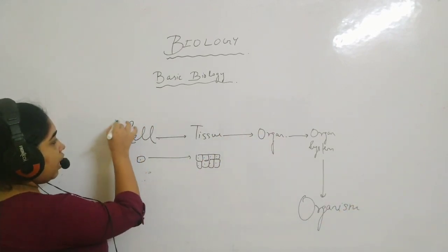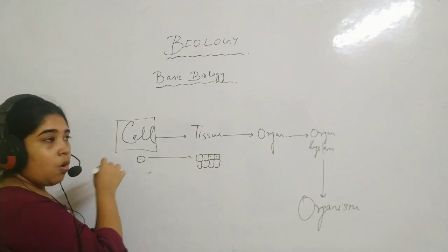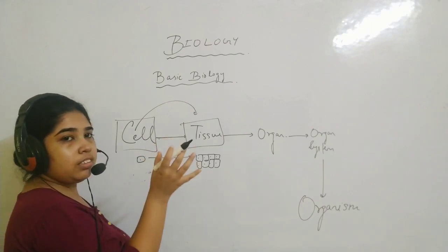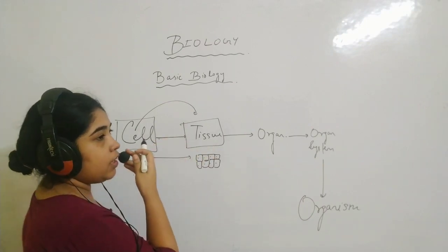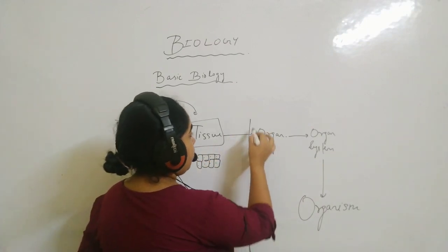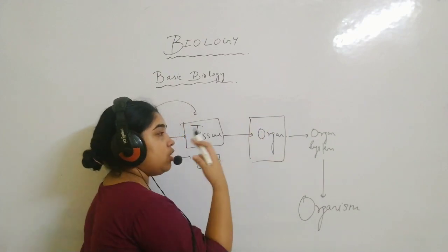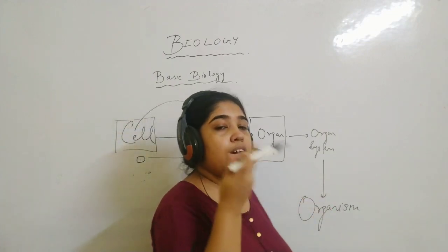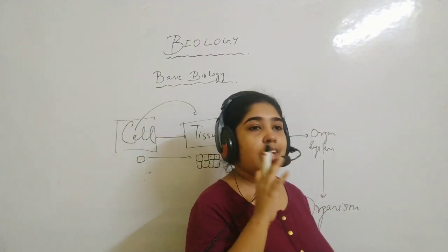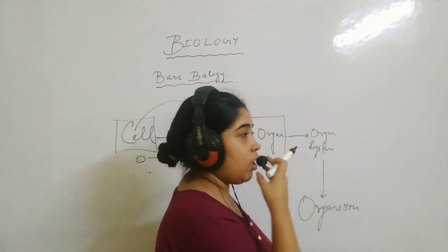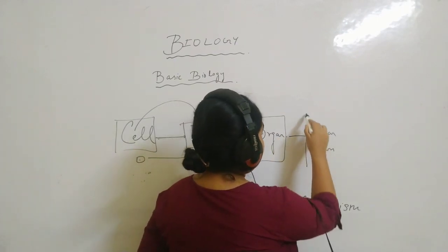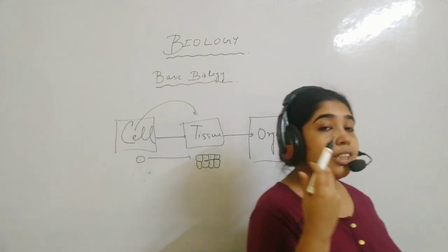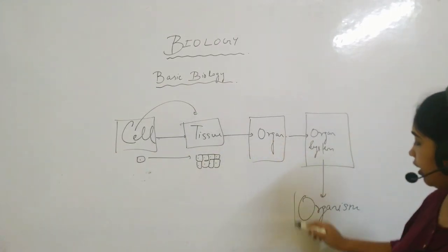So life starts from a single cell. From a single cell, tissue comes — a bundle of many cells. After that, organs come up. Organ means eye, nose, ear. Taking all these organs together — like we as organisms have eyes, nose, ears, tongue to eat, etc. — we get the organ system. And all these organ systems together give us the organism.